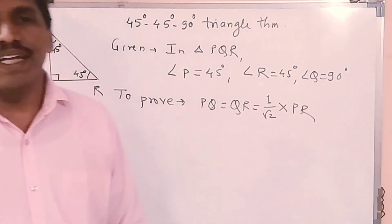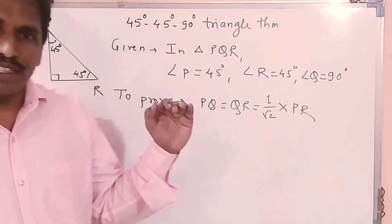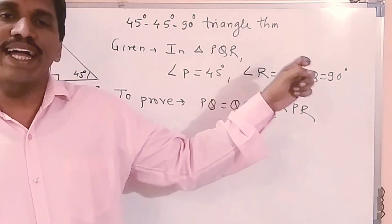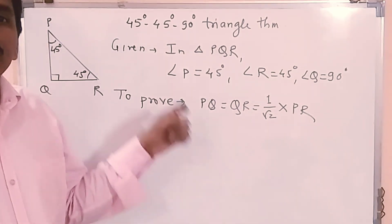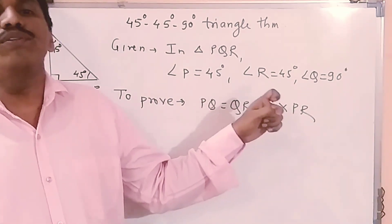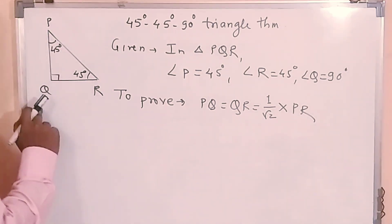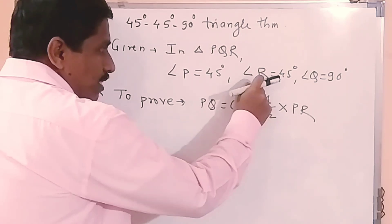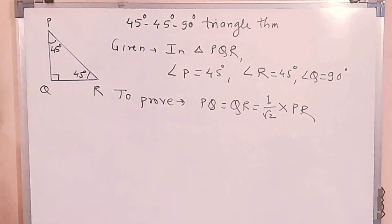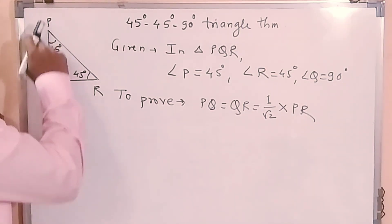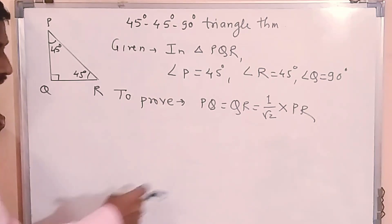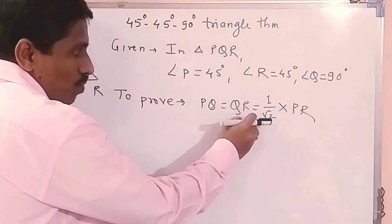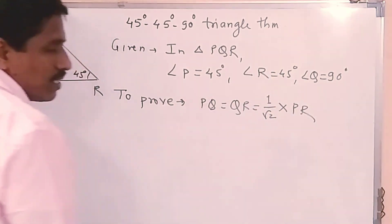The 45-45-90 degree triangle theorem states: if the measures of angles of a triangle are 45 degrees, 45 degrees, and 90 degrees, then the sides forming the right angle are congruent, and their length is 1 upon root 2 times the hypotenuse. In triangle PQR, where angle P is 45 degrees, angle R is 45 degrees, and angle Q is 90 degrees, the sides PQ and QR are both equal to 1 upon root 2 times the hypotenuse.